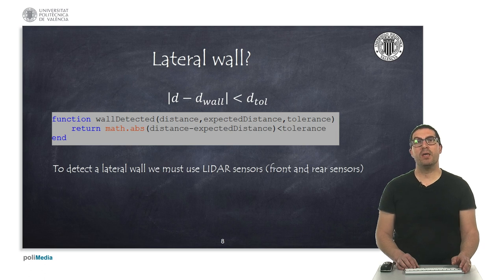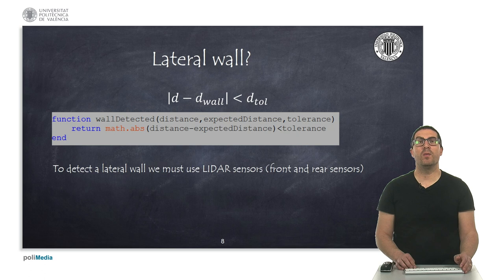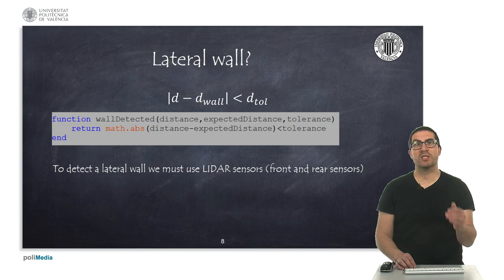We also need to implement a function or a condition to measure if we have a wall in front of the robot using the ultrasound sensor. This is as simple as checking if the measured distance is below the expected distance in front of the robot.